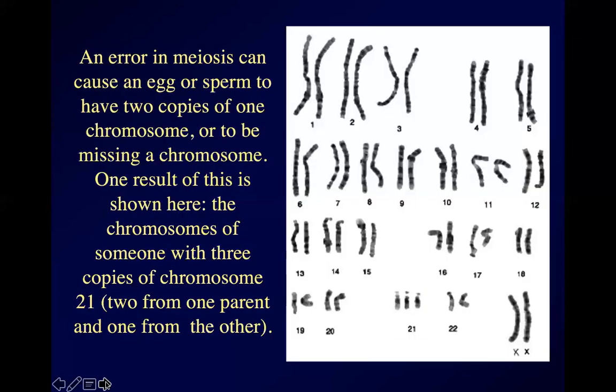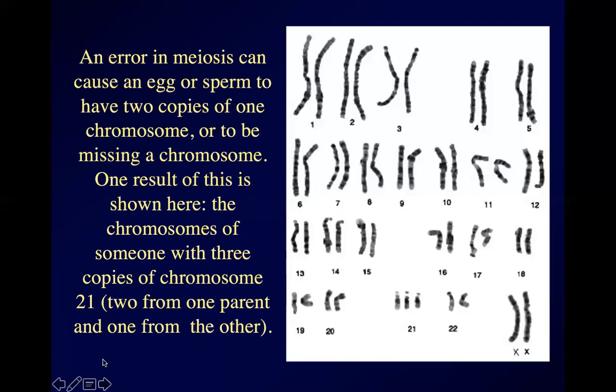Look at chromosome 21 down at the bottom center. That person got two copies of chromosome 21 from one parent and one copy from the other parent. Most of the time when this happens, a fertilized egg is so messed up that it cannot develop any further. If a fertilized egg has three copies of chromosome number one, it typically will not be able to develop for very long, and in humans it will miscarry — quite possibly before a woman is even aware she had a fertilized egg at all. In fact, something between 25 and 50 percent of all human conceptions never develop at all.